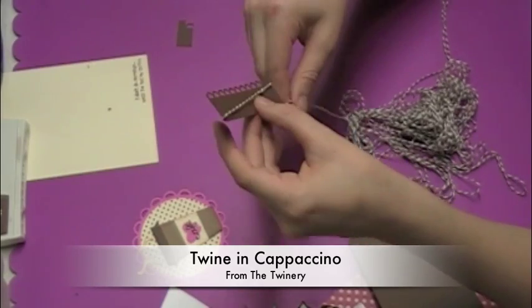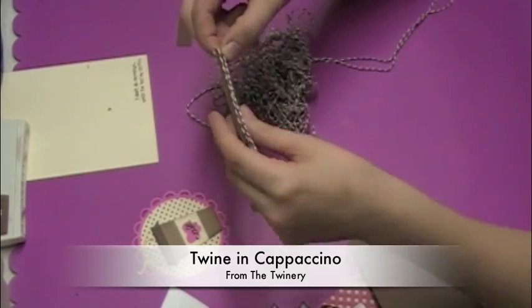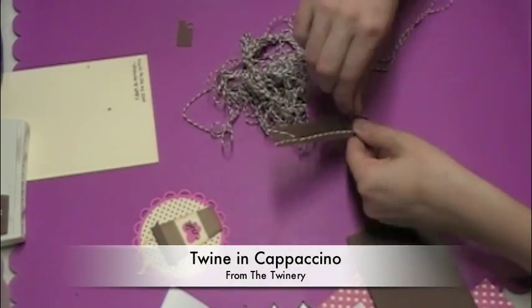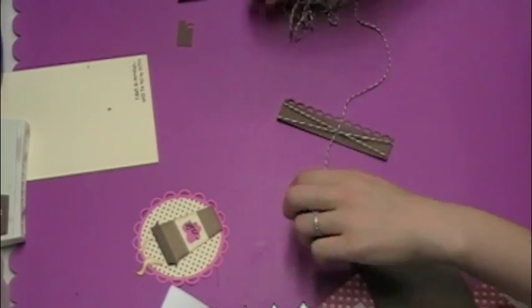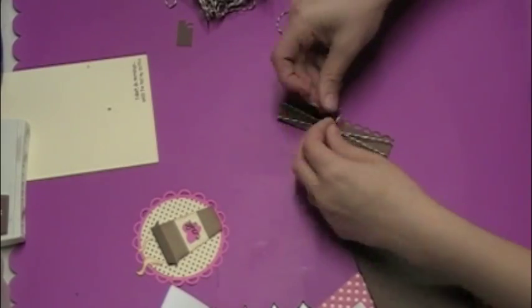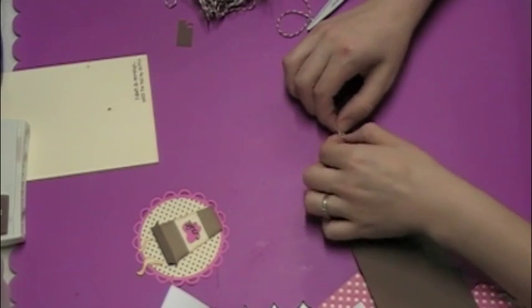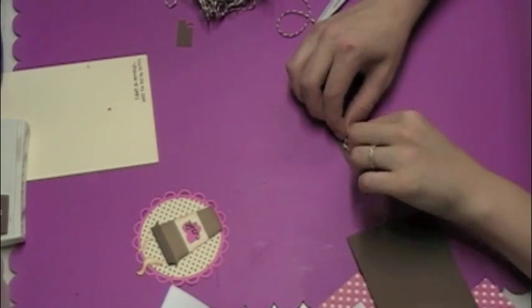Now I've got some twine from the Twinery and this color is called Cappuccino. Perfect for a coffee card don't you think? So I'm trimming off the extra and now I'm going to tie a bow in the middle where the two pieces of twine cross. So I start with a simple knot and then I tie it into a bow.